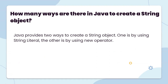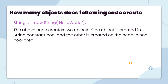How many ways are there in Java to create a String object? There are two ways: one is by using the String literal and another is by using the new keyword. For example, String s equals new String 'helloBud'. This Java code creates two objects — one object is created in the String constant pool and another object is created in the heap, in the non-pool area.